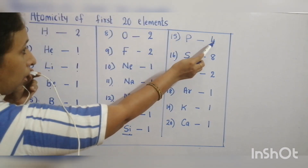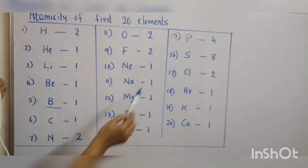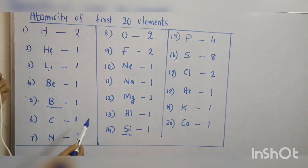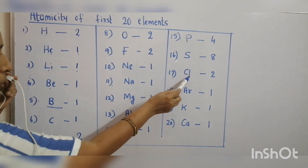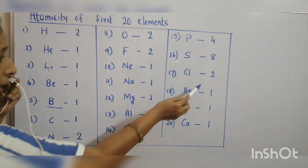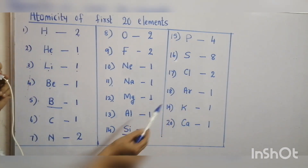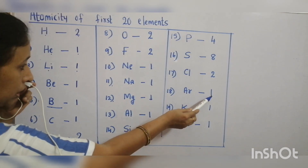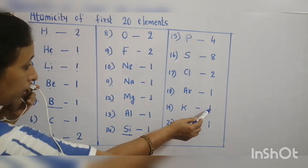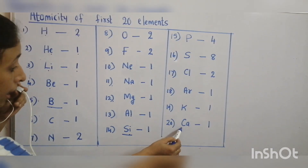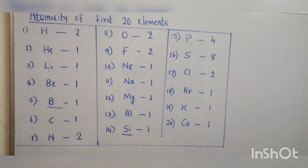Phosphorus is tetraatomic, atomicity four. Sulfur is octaatomic, atomicity eight. Chlorine is a diatomic gas, atomicity two. Argon is an inert gas, atomicity one. Potassium is a metal, atomicity one. Calcium is also a metal, atomicity one.